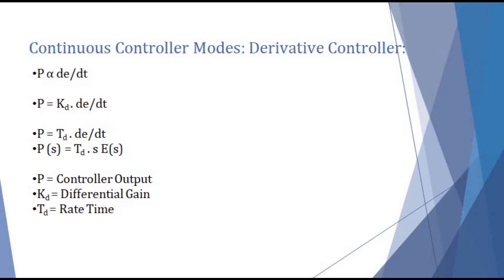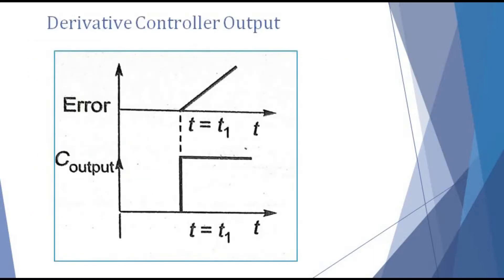Here, P is the controller output, KD is the differential gain, and TD is the rate time. Now, let us see the derivative controller's output graph. If we use a ramp signal as an error signal, the output is a step signal, because the derivative of a ramp signal is basically a step signal.